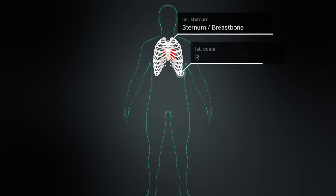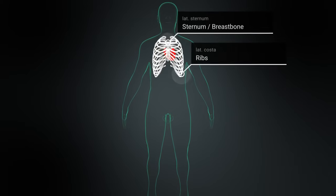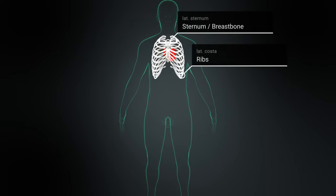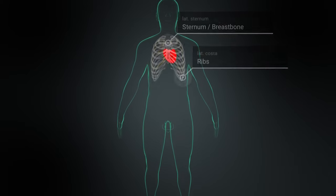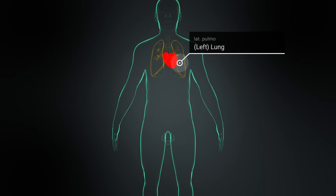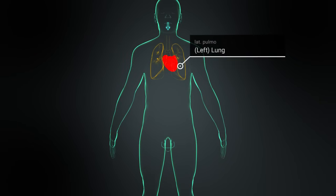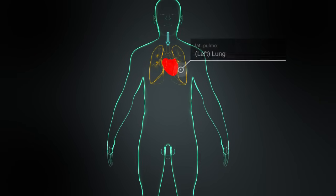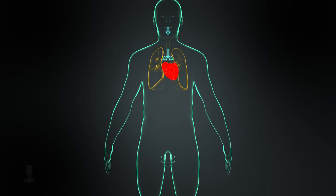The human heart lies well protected in the chest behind the ribs and sternum. To the left and right are the lungs, which absorb oxygen from the air we breathe.